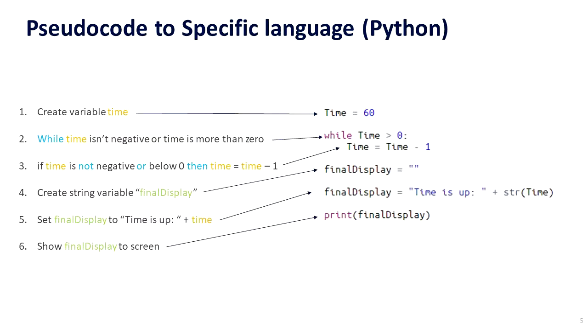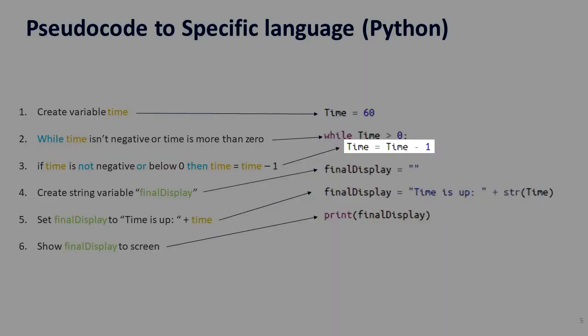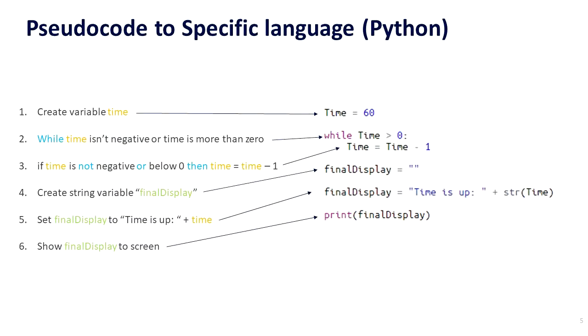So we assign time to 60. Then we do a loop while time is more than zero. Then we assign time to time minus one. We create a variable called final display. We assign it to "time is up" plus string time since we can't use an integer in a string.